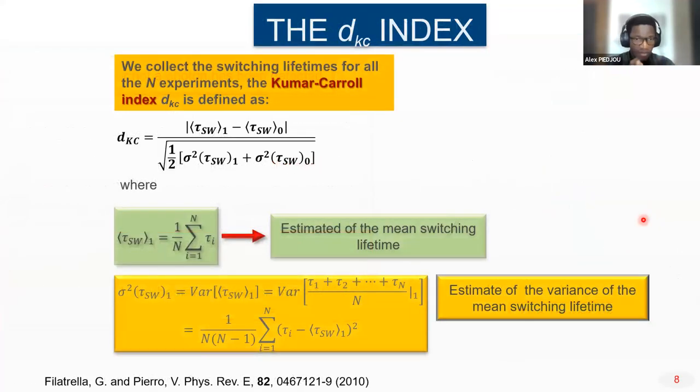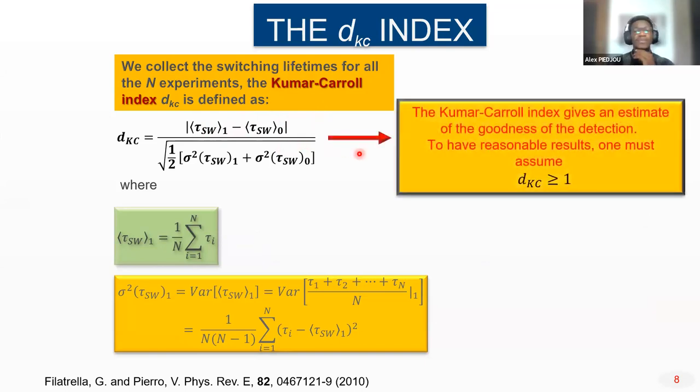To make this analysis more quantitative, we introduce a statistical index, the DKC, the Kumar-Carroll index, that is actually an estimator of the signal to noise ratio. The DKC basically compares the distribution of the switching times, the mean switching times, when the signal is present on the system, which is subscript 1 here, and the distribution of the mean switching times when there is no signal. One assumes that for a reasonable result, the DKC has to be greater or equal to 1. That's actually what we are going to use to decide if our signal has been detected.